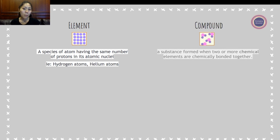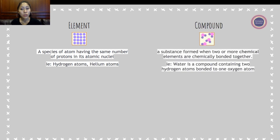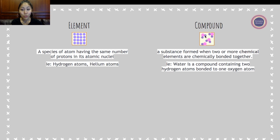A compound is a substance formed when two or more chemical elements are chemically bonded together. For example, water is a compound containing two hydrogen atoms bonded to one oxygen atom. You can see that there's one atom of oxygen bonded with two atoms of hydrogen in this microscopic view.